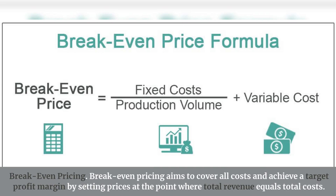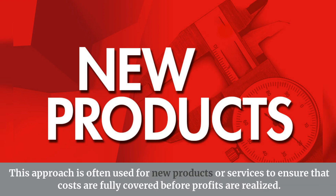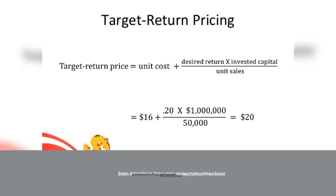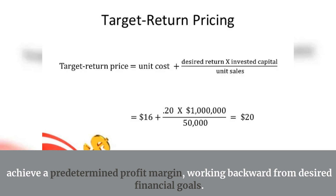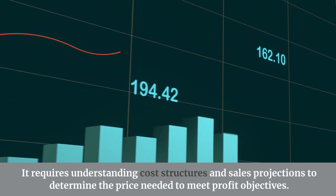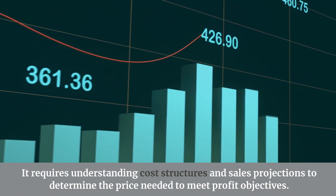Break-even pricing aims to cover all costs and achieve a target profit margin by setting prices at the point where total revenue equals total costs. This approach is often used for new products or services to ensure costs are fully covered before profits are realized. Target return pricing involves setting prices to achieve a predetermined profit margin, working backward from desired financial goals; it requires understanding cost structures and sales projections to determine the price needed to meet profit objectives.